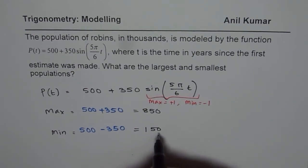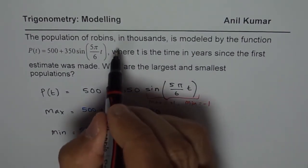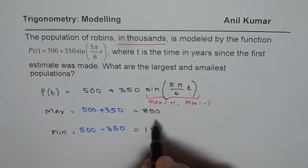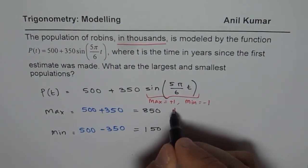But remember one more thing. In the equation, the population of robins is in thousands. So you have to write 850,000.